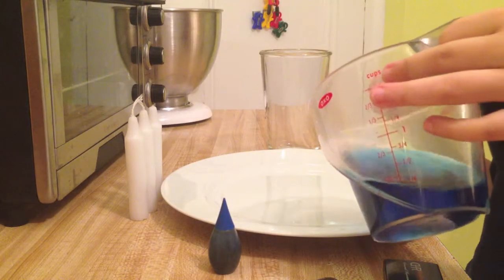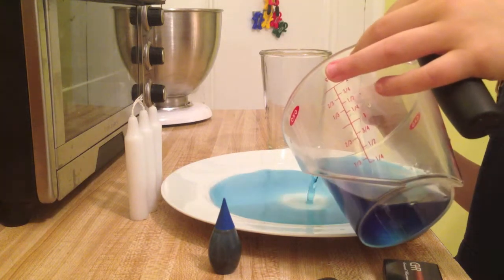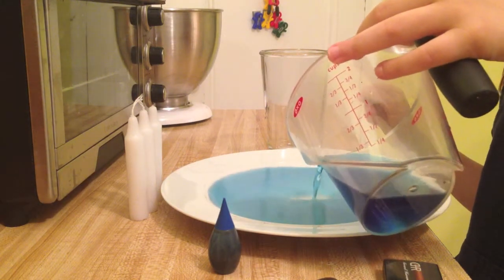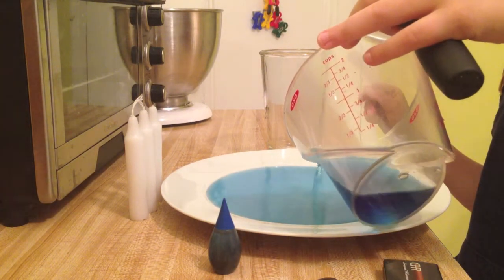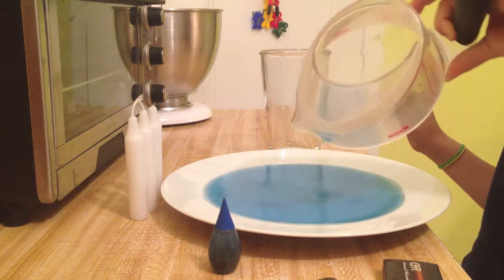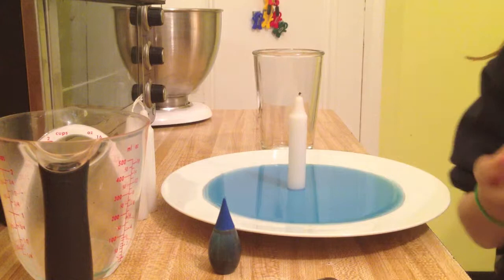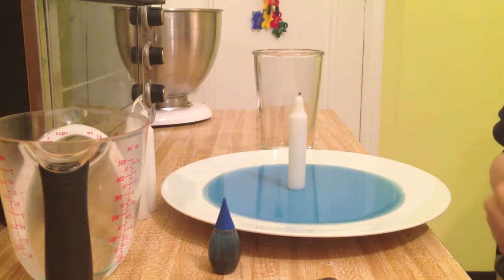Pour the water onto the plate slowly and carefully so you don't spill it. Then put a candle in the middle of the plate. Next, light it. Get a parent to do that.